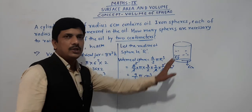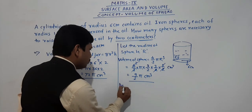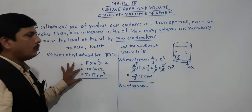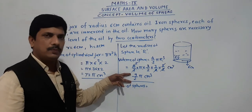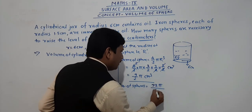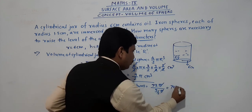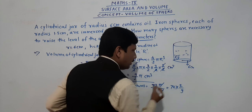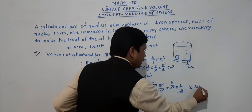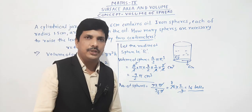Now we have to find the number of spheres. Number of spheres equals volume of cylindrical jar divided by volume of one sphere: 72π ÷ (9π/2). Pi cancels, leaving 72 × 2/9. Since 9 × 8 = 72, this gives 8 × 2 = 16. So 16 spherical balls must be immersed — that's when the height increases by 2 centimeters.